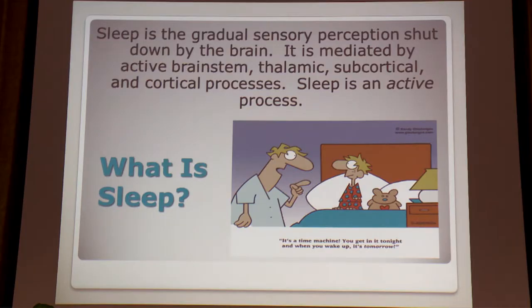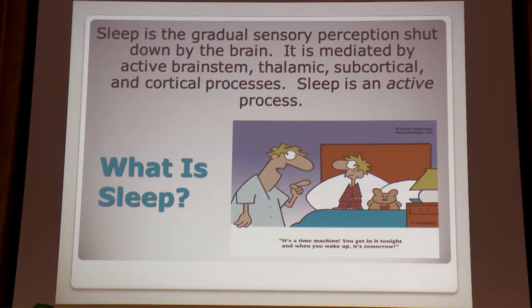What is sleep? Here is the official definition. Sleep is the gradual sensory perception shut down by the brain — smell, hearing, et cetera. It is mediated by an active brainstem, thalamic, subcortical, and cortical processes. Sleep is an active process. The brain is more active when we're sleeping than when we are awake.